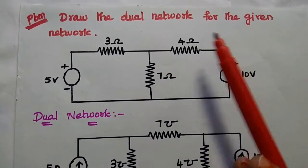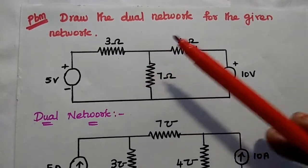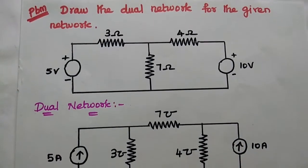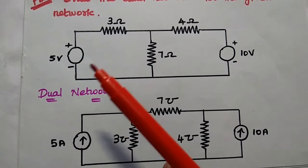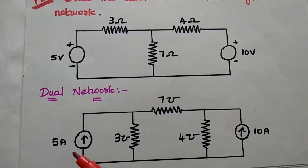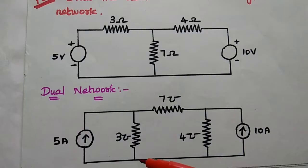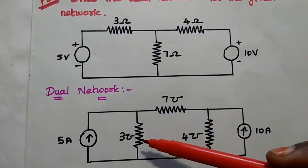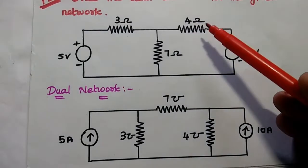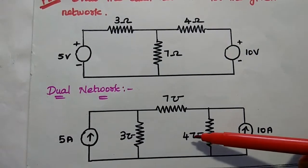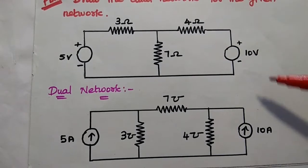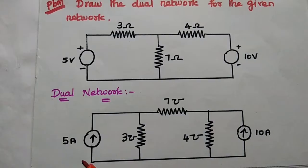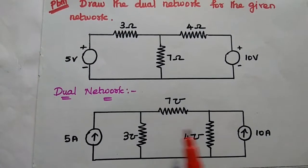Draw the dual network for the given network. Here we have a voltage source in series with 3 ohm, 7 ohm, and then 4 ohm in series with a 10 ohm voltage source. We are going to draw the dual network for this given circuit. In the dual network, we convert the voltage source into a current source. So the 5 V becomes a 5 ampere current source. This 3 ohm is converted to 3 ohm conductance — resistance is converted into conductance. Similarly, 7 ohm becomes 7 ohm conductance, and 4 ohm becomes 4 ohm conductance in parallel with the current source. The 10 V becomes a 10 ampere current source. So voltage sources become current sources, and resistances in series become conductances in parallel.